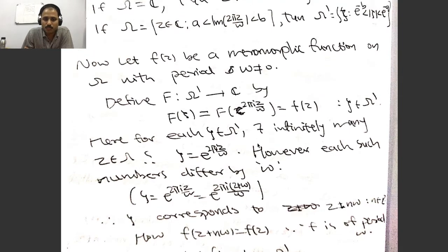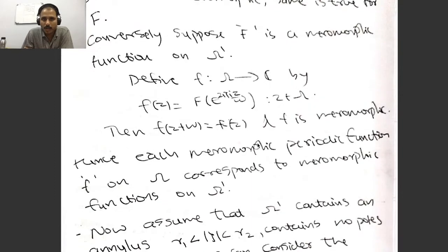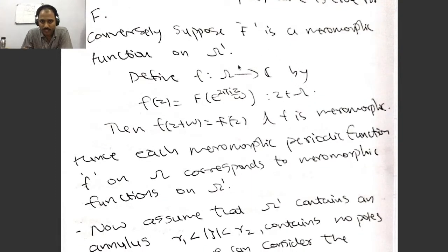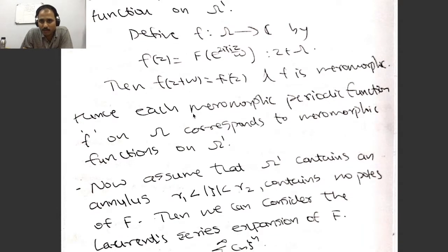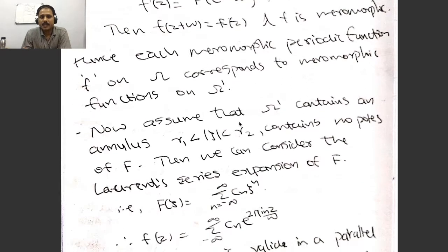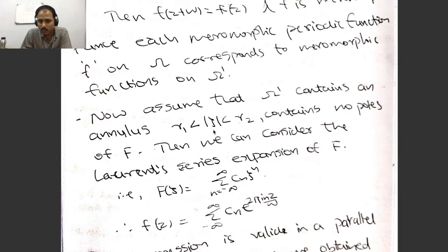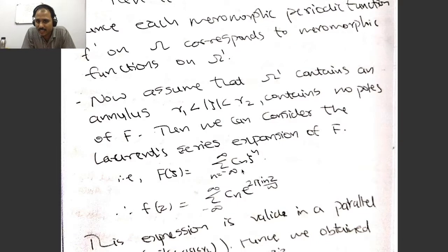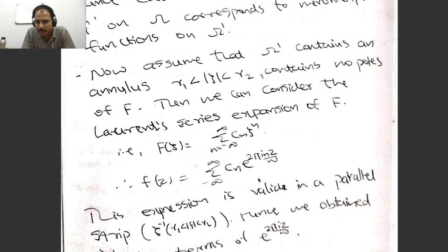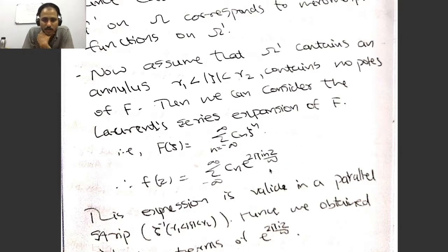Corresponding to each small f, we get a capital F on Ω' which is again a meromorphic function. The converse is also true: if we start from a meromorphic function capital F on Ω', the same definition gives a periodic function on Ω. Hence each meromorphic periodic function f on Ω corresponds to a meromorphic function on Ω'. This leads to the Fourier development of f in terms of exp(2πiz/ω).